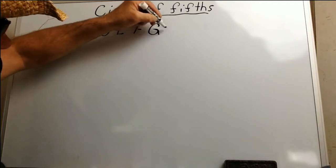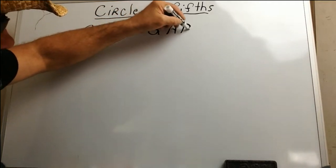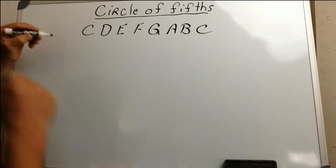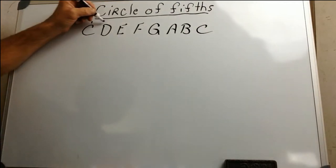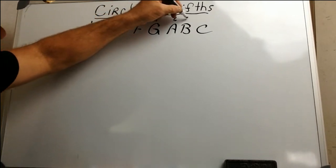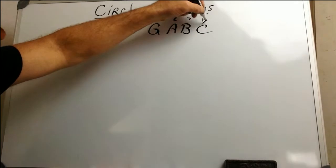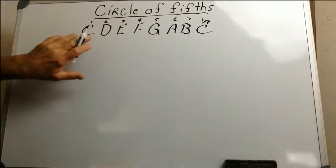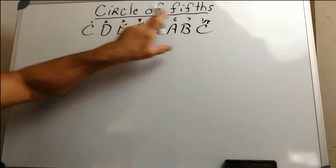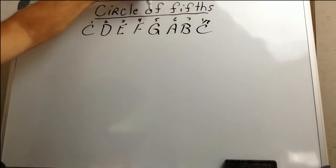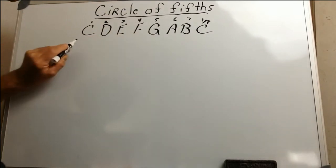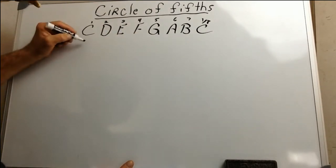The C scale goes C, D, E, F, G, A, B, and C — that's 1, 2, 3, 4, 5, 6, 7, and 1 (or 8). Number 1 and the 8th are the same note. When we are doing our circle of fifths, we go to the fifth of each scale, bring it down, and start our new scale below it.